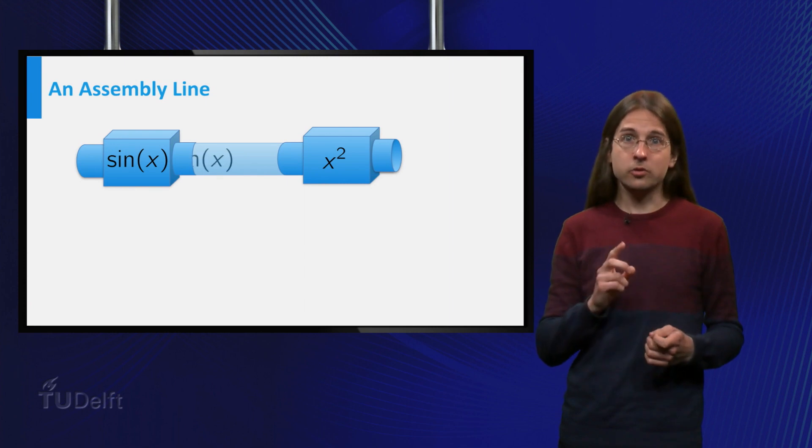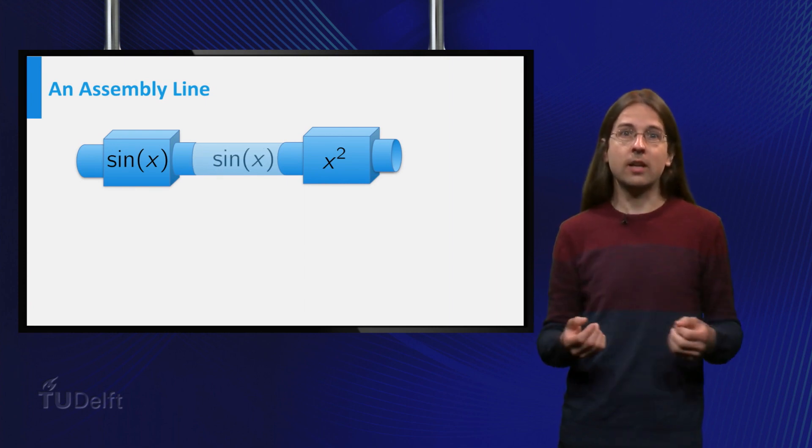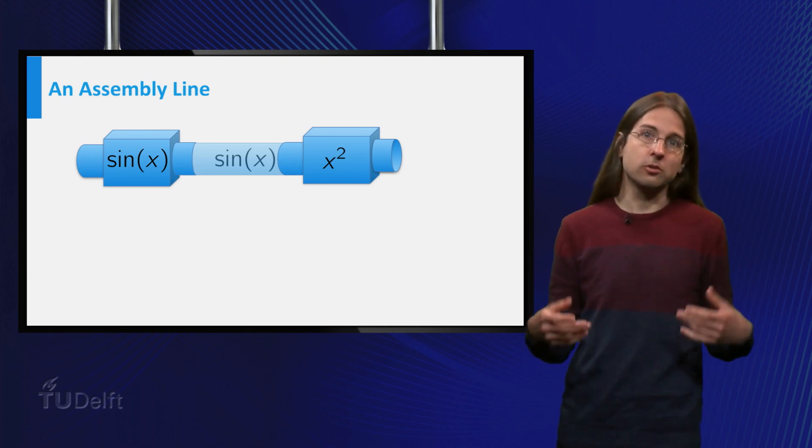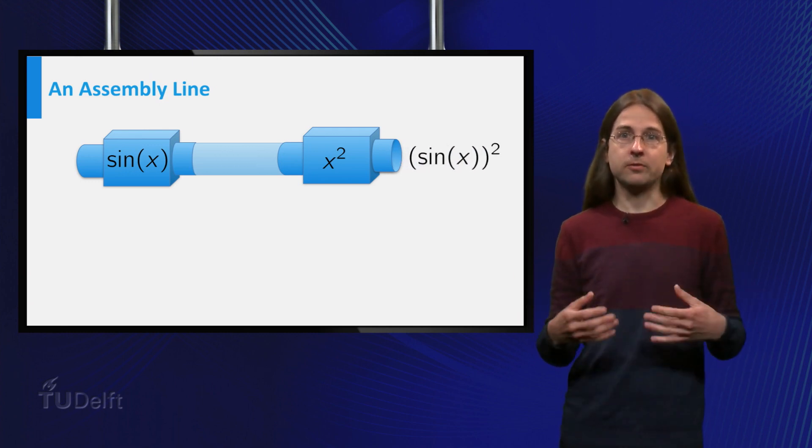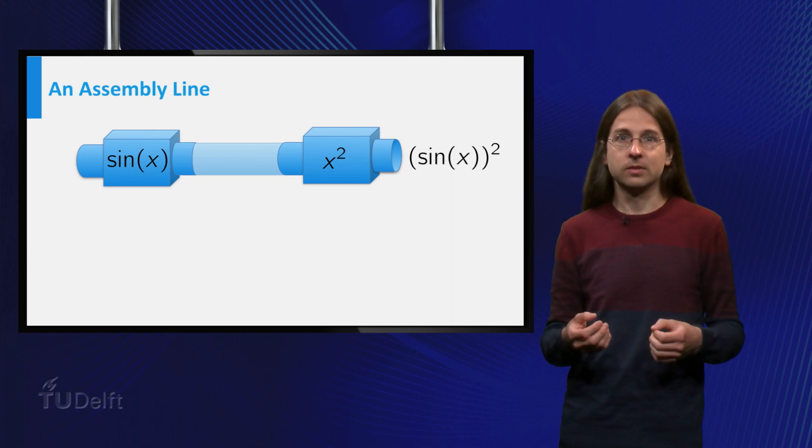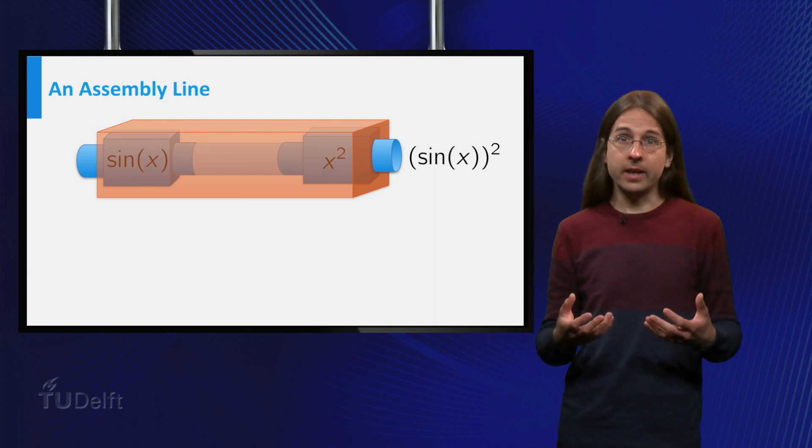Moving the input x first through the sine, the intermediate outcome is sine of x. Then moving this through the square function, we end up with sine of x squared. Together, they form a new function, the composition of x squared, the rightmost function,